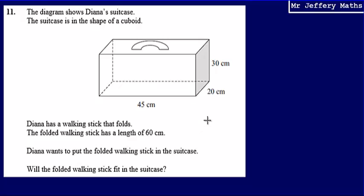This is question 11. Here we're told the diagram shows Diana's suitcase. We're told that the suitcase is in the shape of a cuboid.